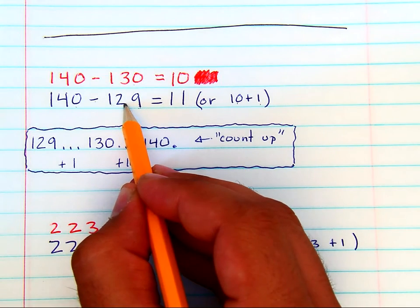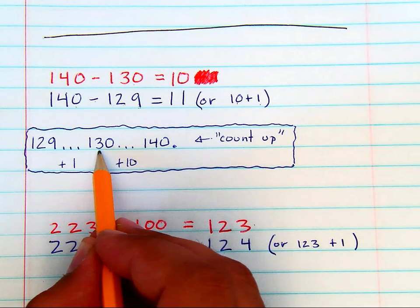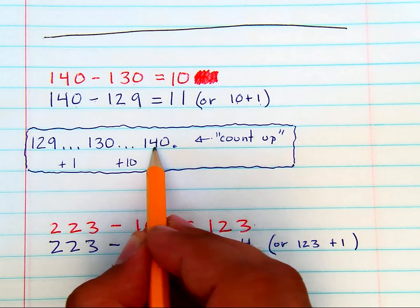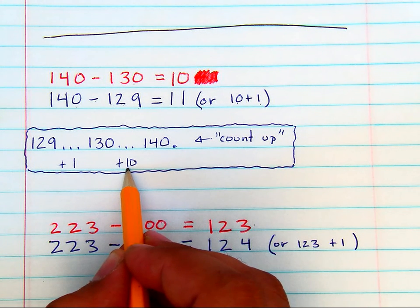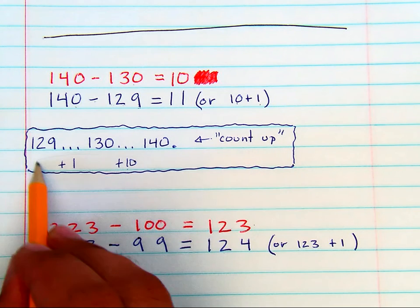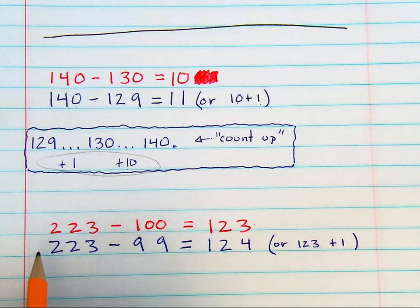And you can check by counting up. From 129, count up to 130, that's plus 1, and count up to 140, that's plus 10. So you get your 11, no matter what mental strategy you use.